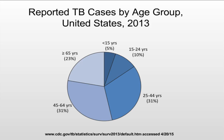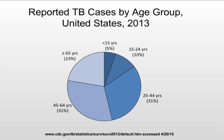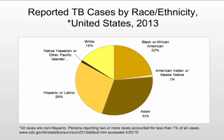Tuberculosis is not a disease only of the weak, elderly, or young. Up to 62% of cases occur in patients aged 25 to 64 — healthy people at the prime of their lives, not necessarily with comorbidities. In the United States, the racial breakdown of TB diagnoses shows approximately 32% Asian descent, 29% Latino, 22% African-American, 15% Caucasian, and smaller percentages in American Indian, Alaskan Native, and other groups.